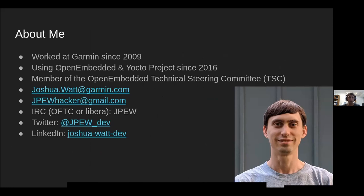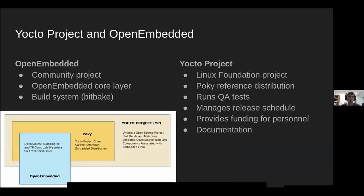I am a member of the OpenEmbedded Technical Steering Committee. If you're unfamiliar with either the Yocto Project or OpenEmbedded, they're two organizations that work together to help you build your own Linux distributions — primarily but not exclusively focused on embedded projects. OpenEmbedded is a community-driven project providing core technologies such as OpenEmbedded Core and the BitBake build system. The Yocto Project is a Linux Foundation project that provides resources to keep things running smoothly, including QA tests, release scheduling, and documentation.